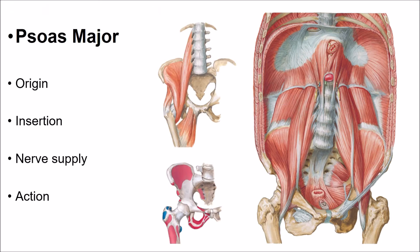The psoas major muscle arises from the lower border of the transverse process of all five lumbar vertebrae and by five fleshy slips from the bodies and intervertebral discs of the lumbar vertebrae.